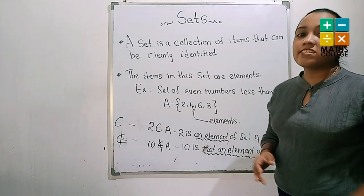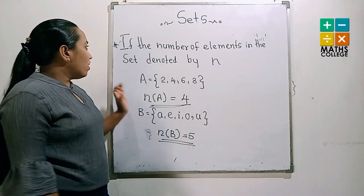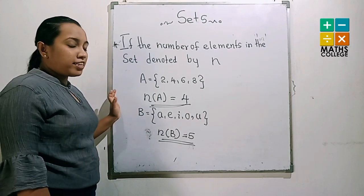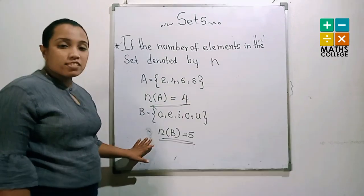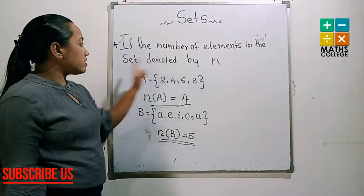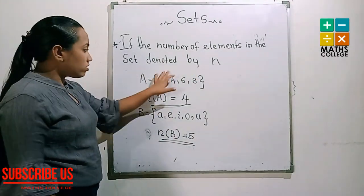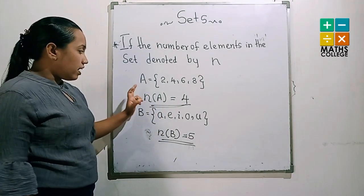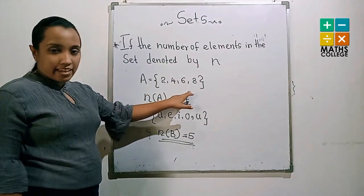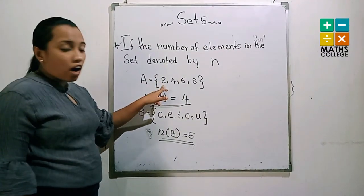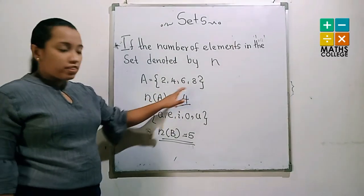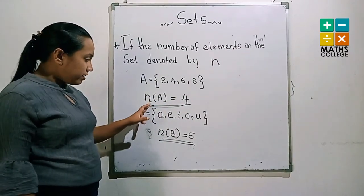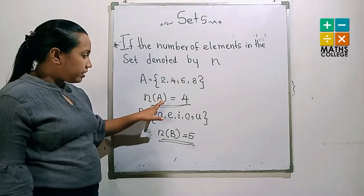Now go through the next step. Look at another symbol related to the set lesson. In grade 8, you learned about this symbol. It represents the number of elements in the set, denoted by the symbol N. Considering set A equals {2, 4, 6, 8} — counting how many elements: 1, 2, 3, 4. Therefore, the number of elements in set A is written as N(A) equals 4.